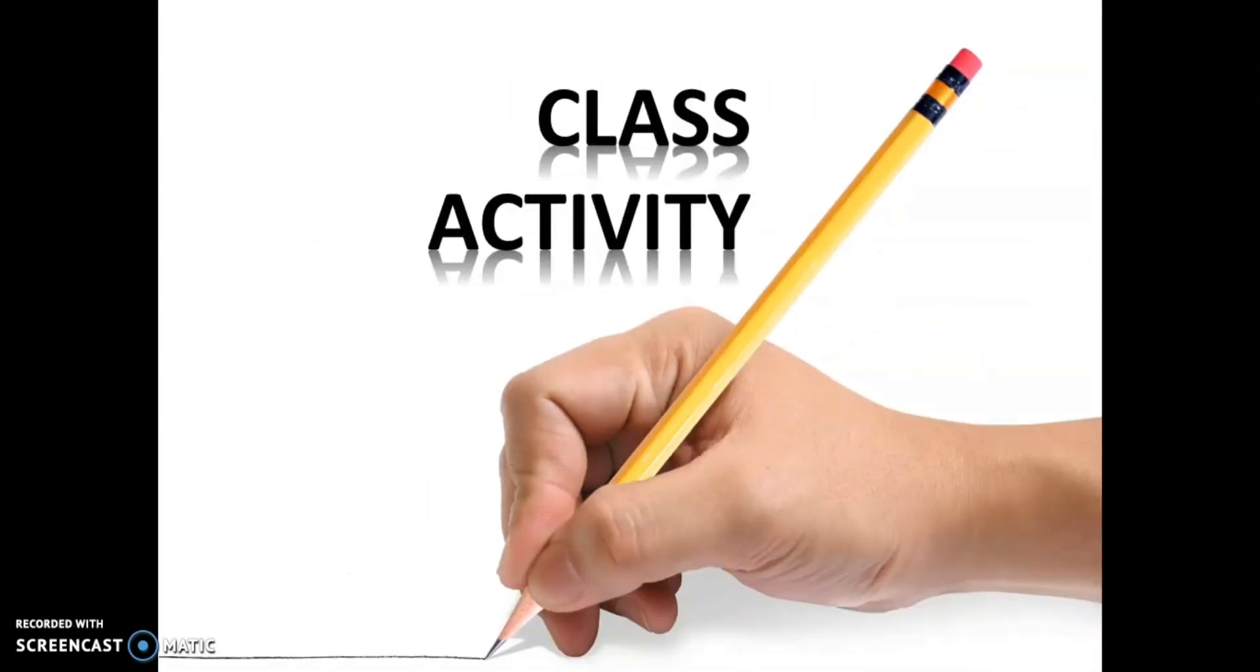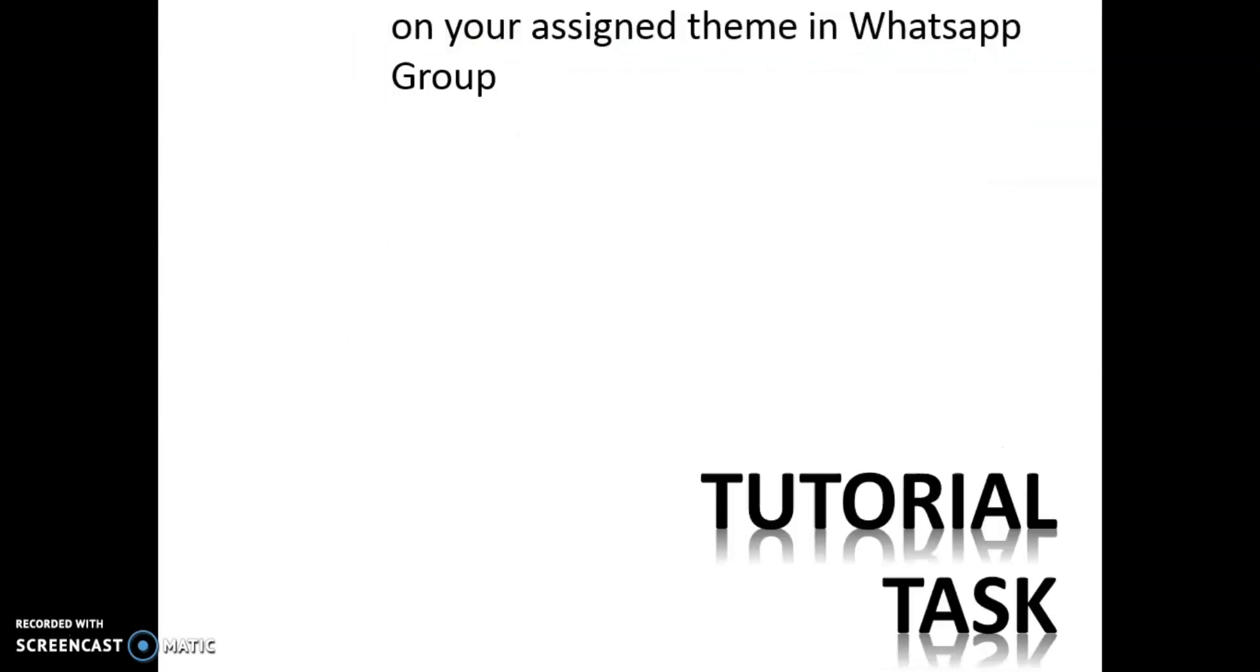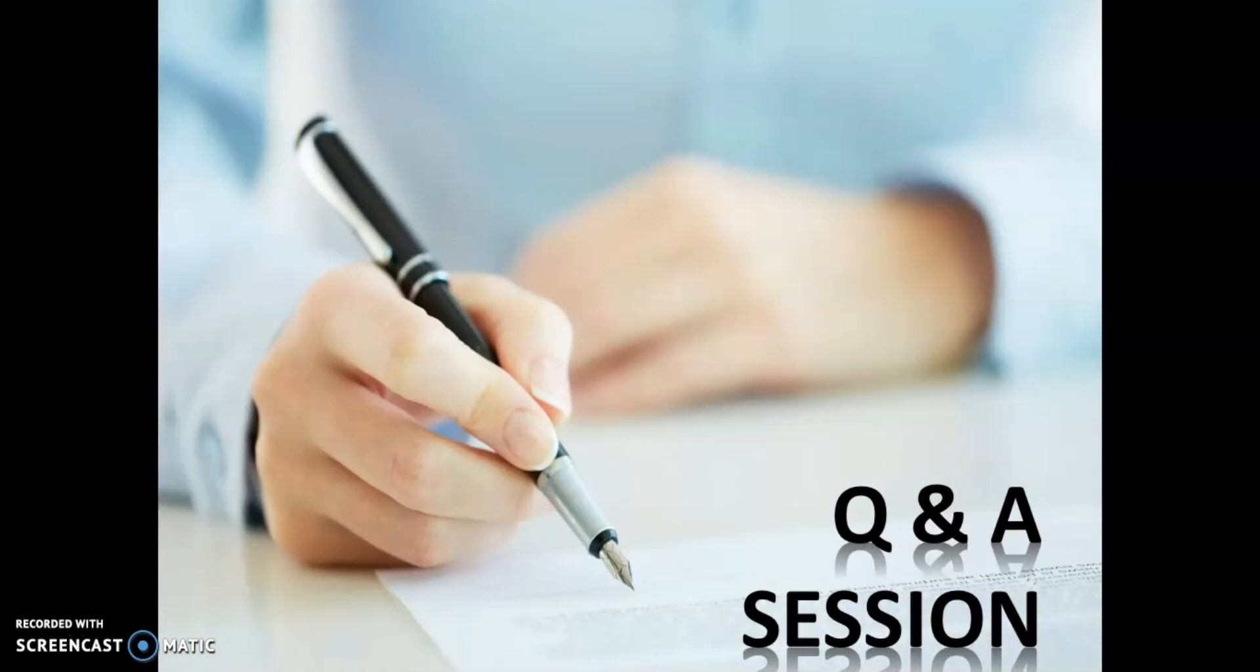Alright, everyone, now it's time for you to conduct class activity. What do you have to do? Work in a group of five. You need to retain your existing group. Each and every member is required to find one word or one term to be defined using short formal definition based on your assigned theme in our WhatsApp group. Once you're done, you need to complete your tutorial task in which based on your guided discussion during in-class activity, each group is required to compile short formal definition and submit in the folder: group activities week nine short formal definition. Till then, see you in the next video. Bye!